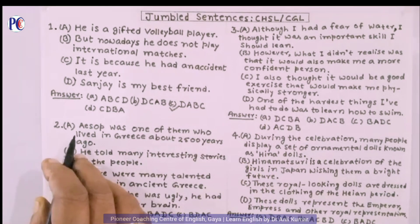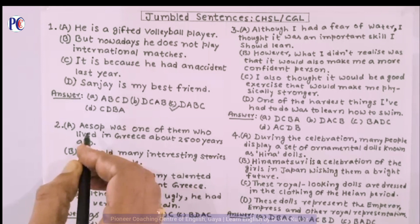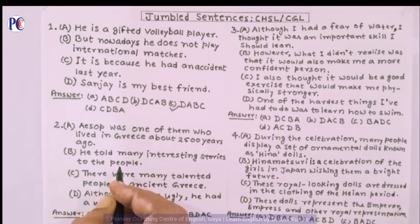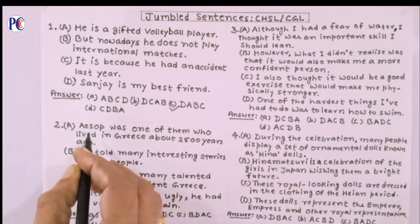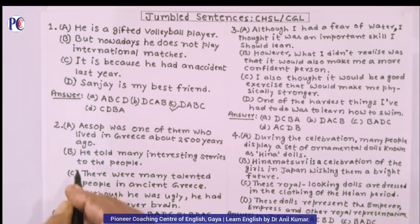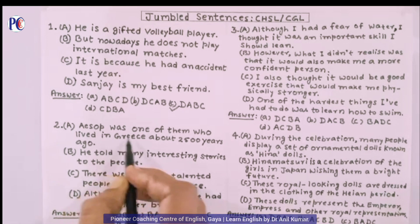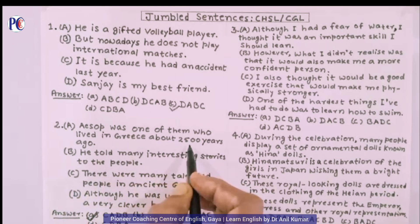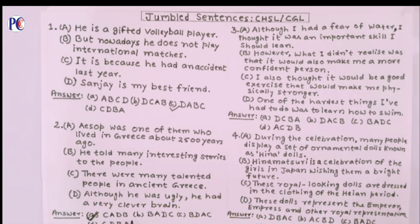Second question. Sentence A: 'A shop was one of them' — 'them' is unclear without prior context. Sentence C: 'There were many talented people in ancient Greece' — this introduces the context, so C is the first sentence. After C, A follows as 'Aesop was one of them who lived in Greece about 2500 years ago.' Then D: 'Although he was ugly, he had a very clever brain,' and B: 'He told many interesting stories to the people.' The right answer is option A: C, A, D, B.